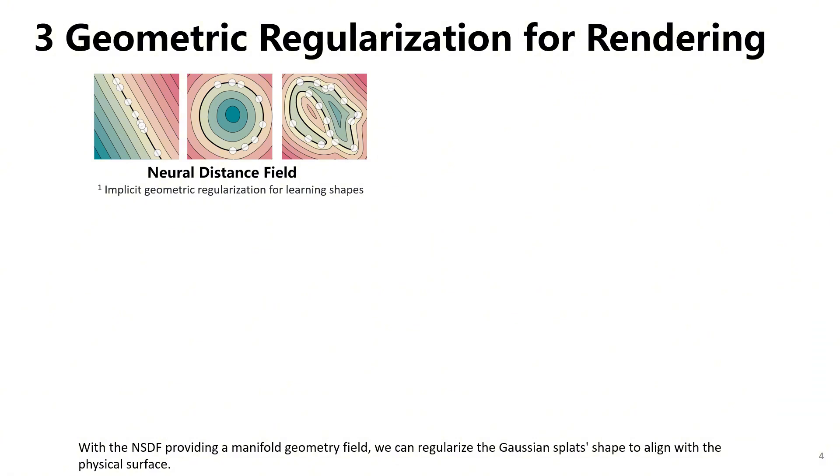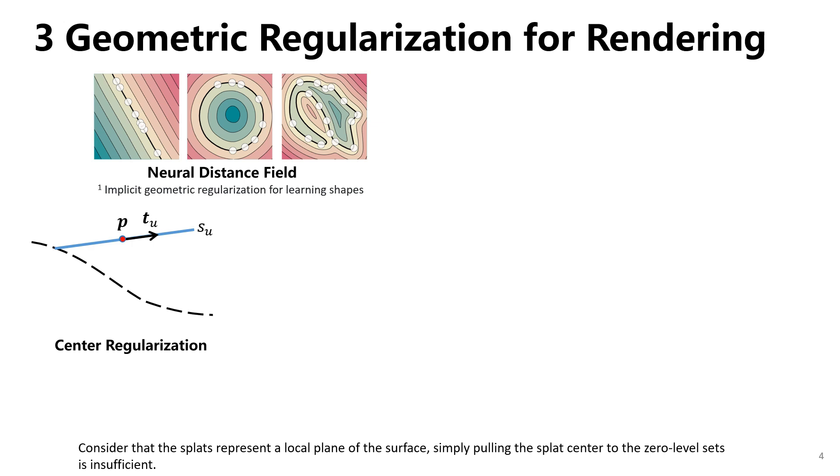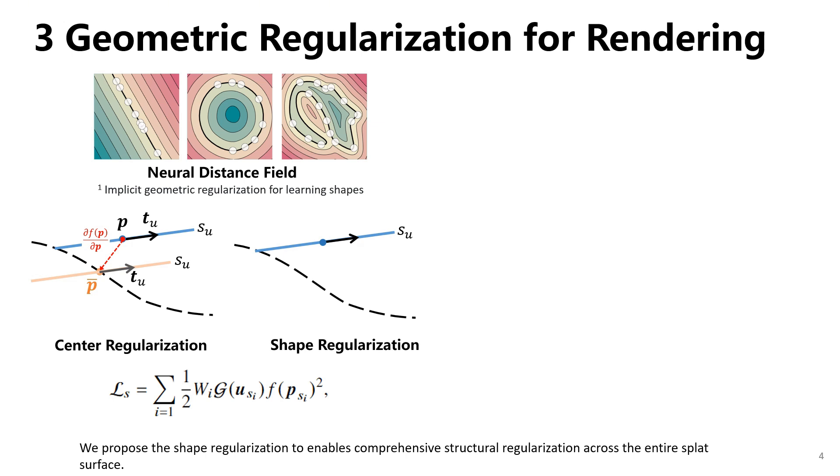With the NSDF providing a manifold geometry field, we can regularize the Gaussian splat shape to align with the physical surface. Considering that the splats represent a local plane of the surface, simply pulling the splat center to the zero level set is insufficient. We propose shape regularization to enable comprehensive structural regularization across the entire splat surface.